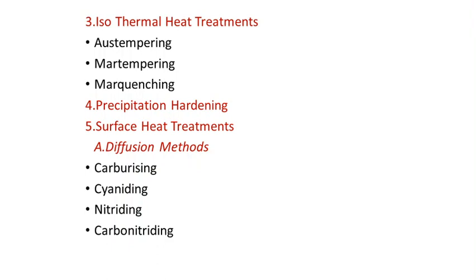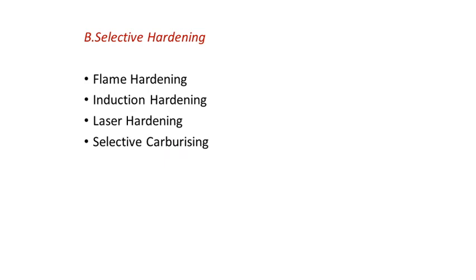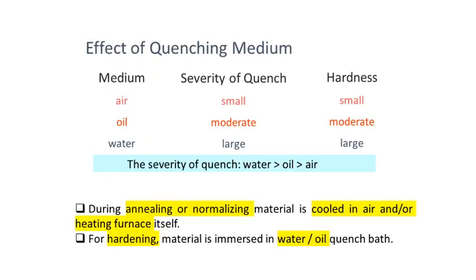The fifth classification is surface treatments. As mentioned, we will have a hardened surface while the inner core retains different properties — hardening takes place at the outer surface, which has more exposure to the environment. Surface hardening involves diffusion methods like carburizing, cyaniding, nitriding, and carbonitriding, as well as flame hardening, induction hardening, laser hardening, and selective carburizing treatments.